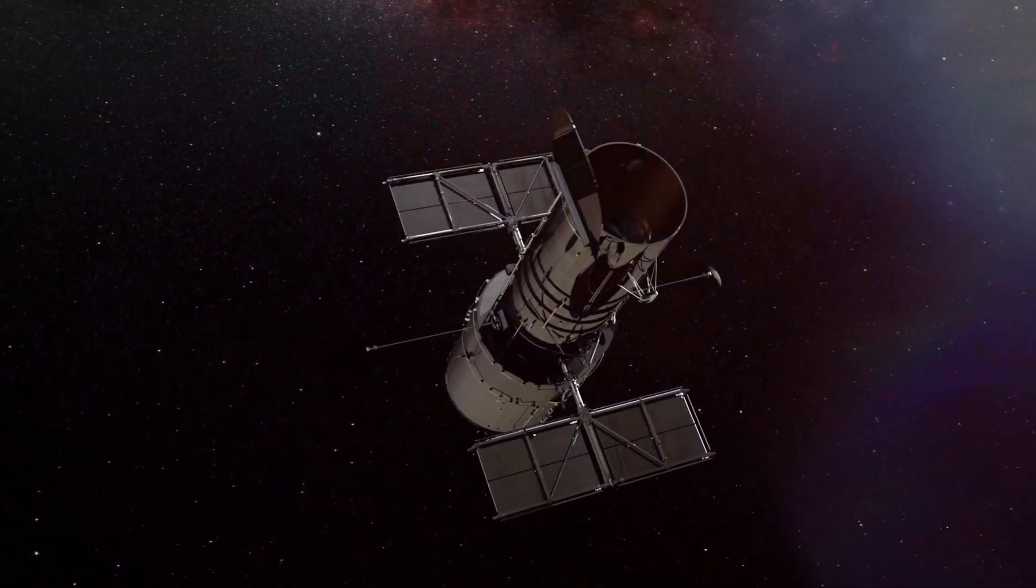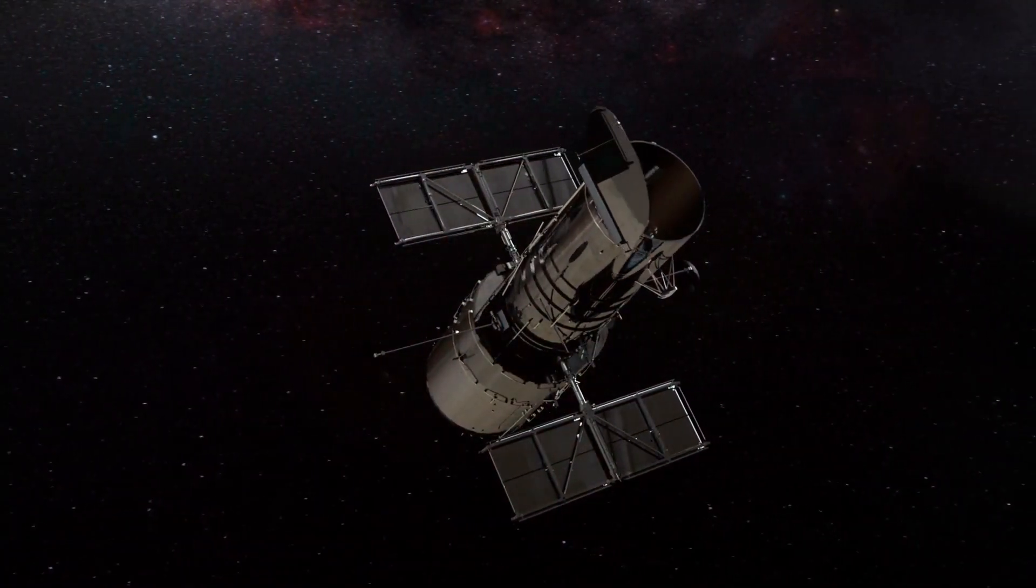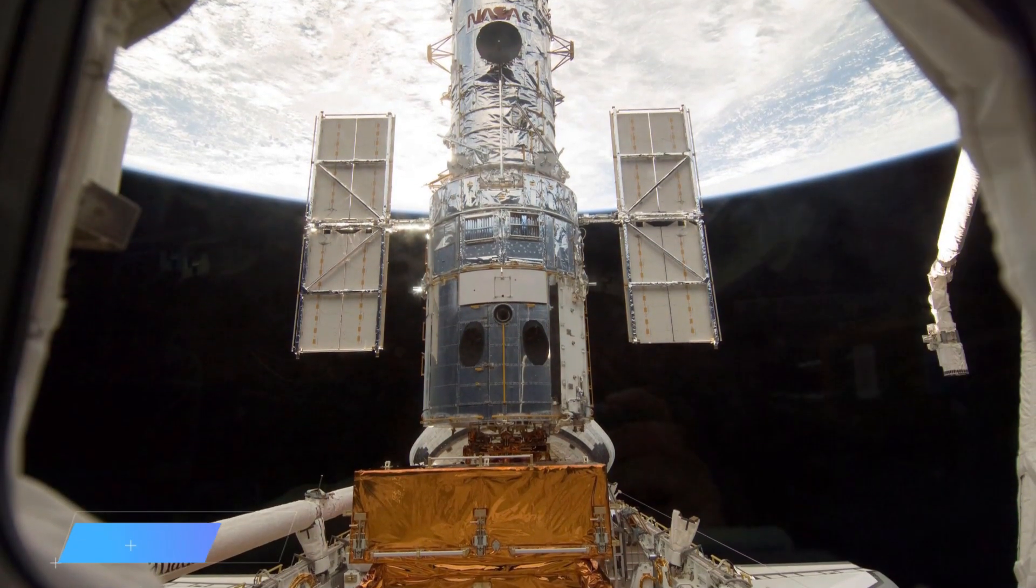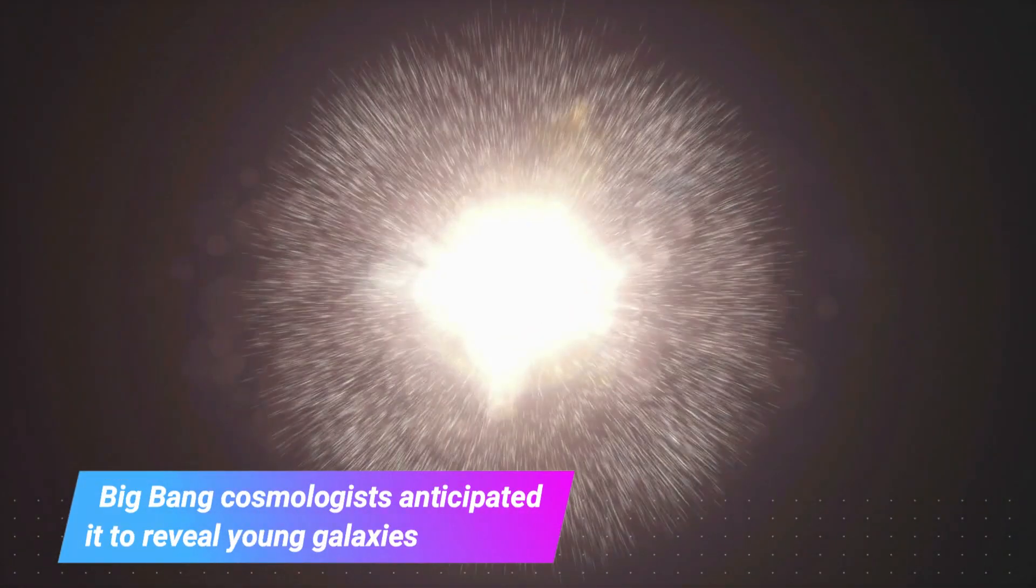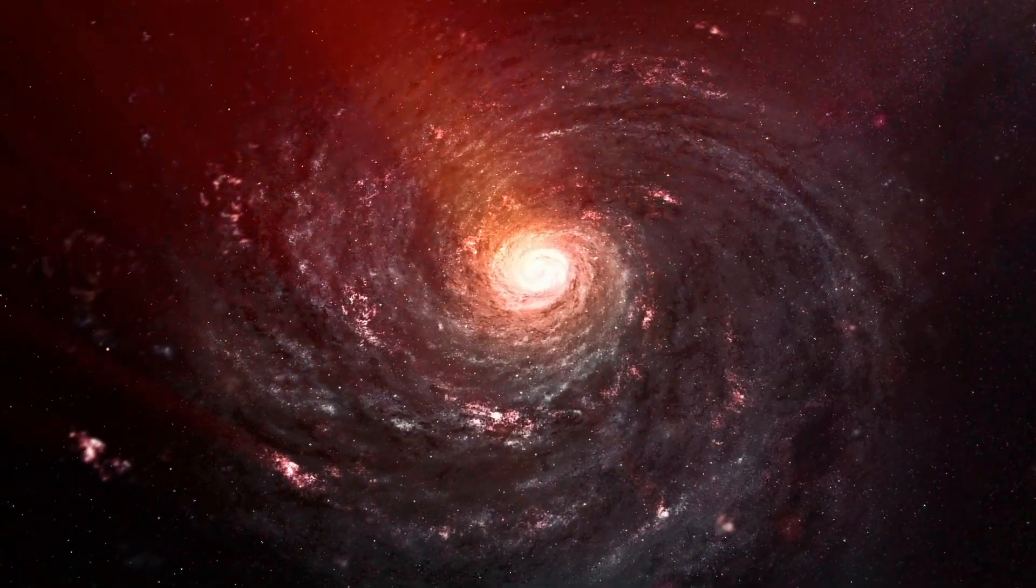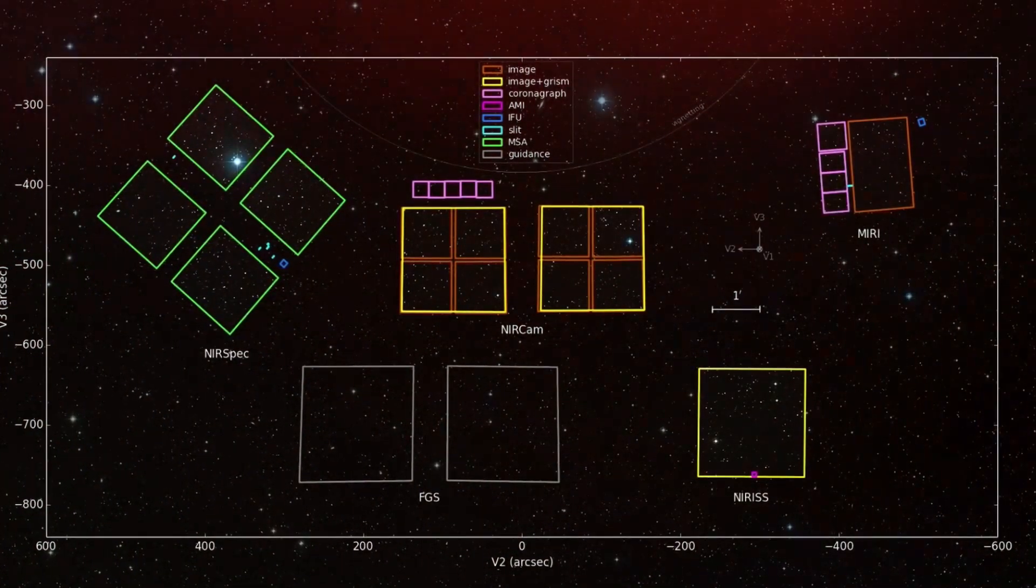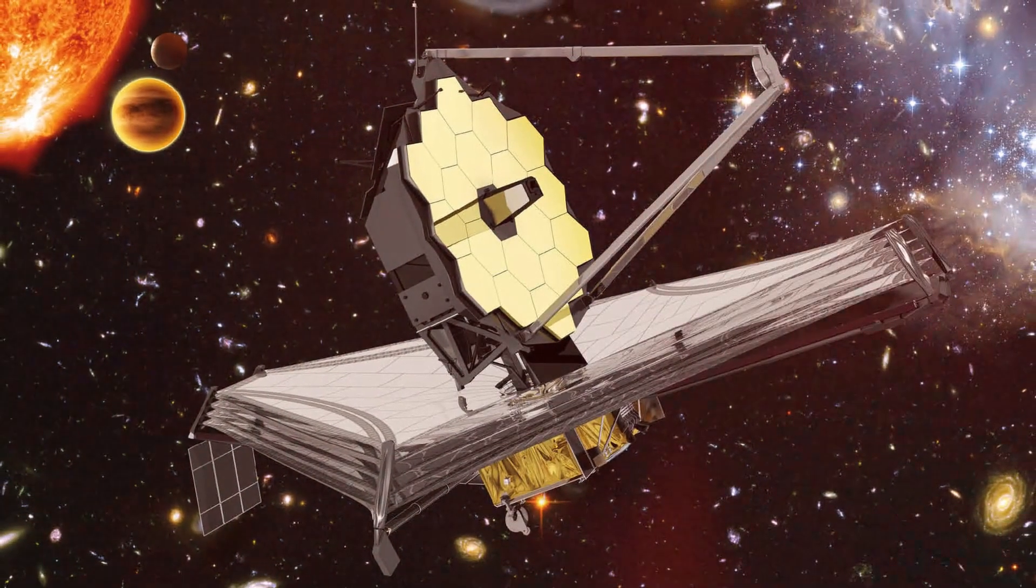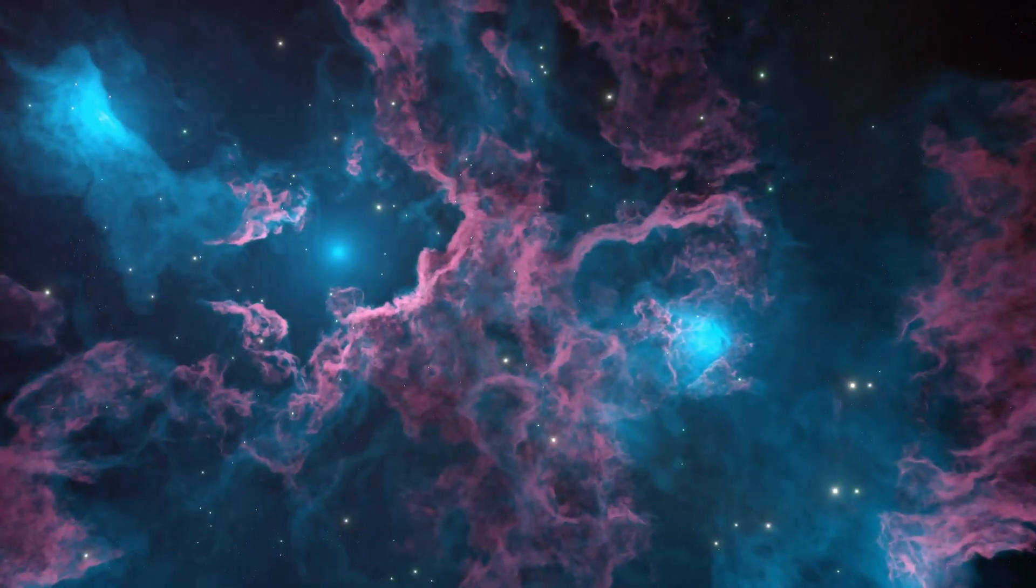The James Webb Telescope, the Hubble Telescope's successor, is now in use. 30 years after the Hubble Telescope's initial launch, Big Bang cosmologists anticipated it to reveal young galaxies shortly after the universe's own beginning. But after looking far into space, the James Webb Telescope is returning images that contradict conventional wisdom and suggest an infinitely large universe.